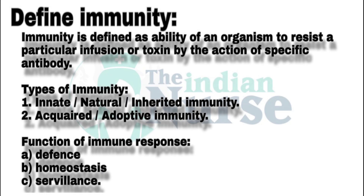Next question, and the last question in this episode: define immunity. Immunity is defined as the ability of an organism to resist a particular infection or toxin by the action of specific antibody. The main types of immunity are innate immunity and acquired immunity. Innate immunity we can call natural inherited immunity, and acquired immunity we can call adaptive immunity. The main functions of immune response are defense, homeostasis, and surveillance.